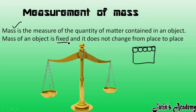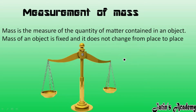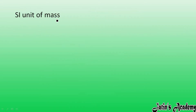The mass of an object is always fixed. It is not going to change from place to place or time to time. If you go from Earth to Moon, the mass will not change. Mass is not going to change anywhere. Weight is going to change — weight can be changed from place to place — but mass cannot be changed from place to place or time to time.